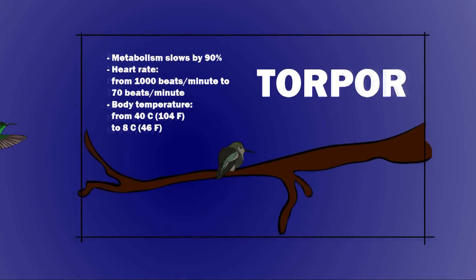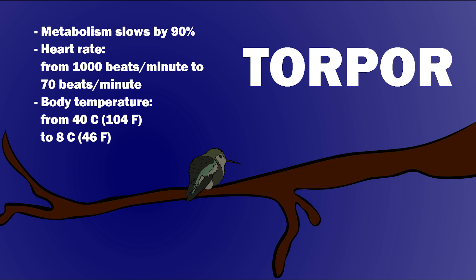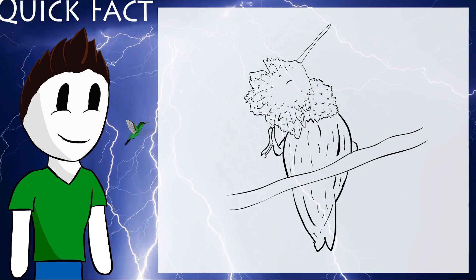The hummingbird can't afford to sleep because it will still use too much energy to survive the night without refueling. They shut down and enter a state beyond sleep: torpor. Torpor is similar to hibernation but it lasts only one night. During the torpor the metabolism slows down by 90%, the heart rate goes from 1000 beats per minute to 70 beats per minute and the body temperature goes from 40 degrees Celsius to about 8 degrees Celsius. And this happens every single night.